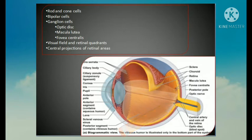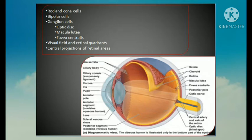The optic disc is about 1.5 mm in diameter and is slightly medial to the posterior pole. It is insensitive to light as it has no sensory receptors, so it is called the blind spot. It represents the point of exit of optic nerve fibers. Its central part is pierced by the central artery of the retina and tributaries of the central veins of the retina.